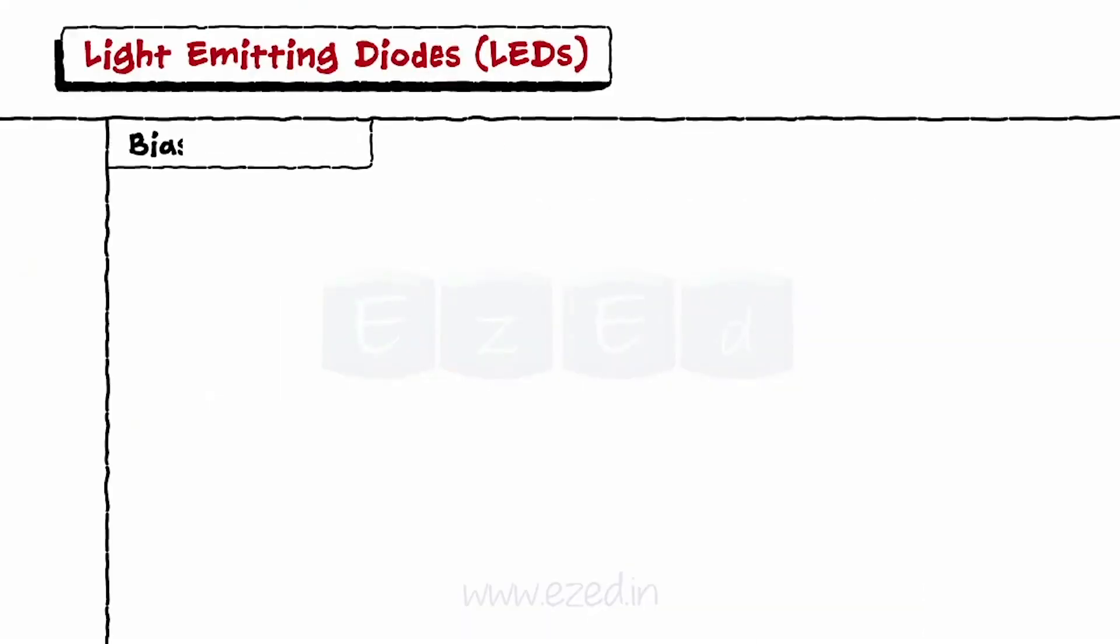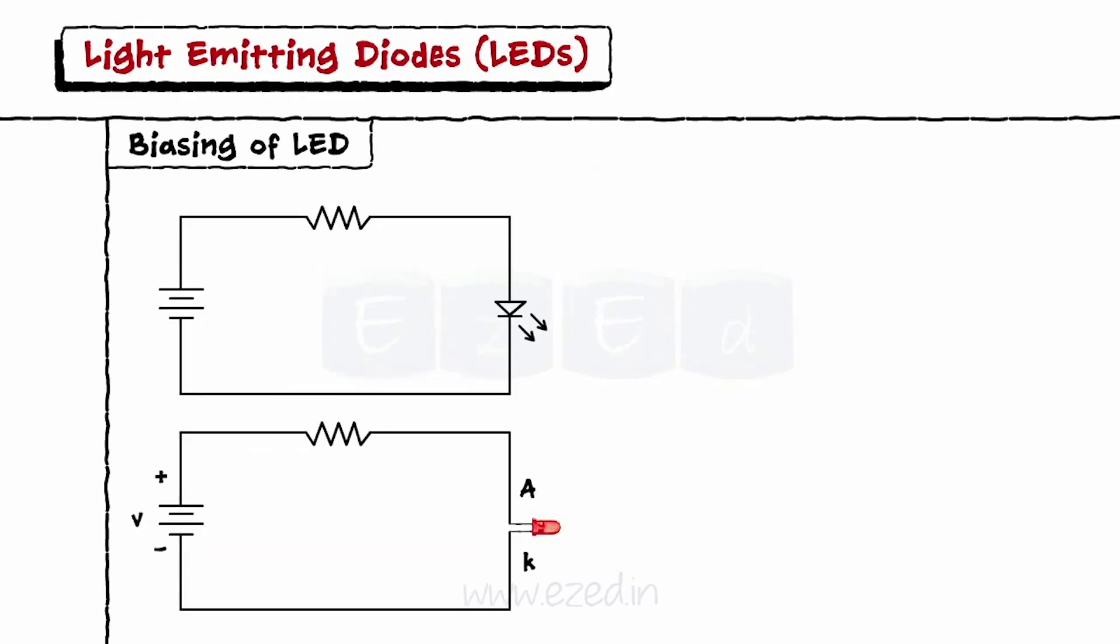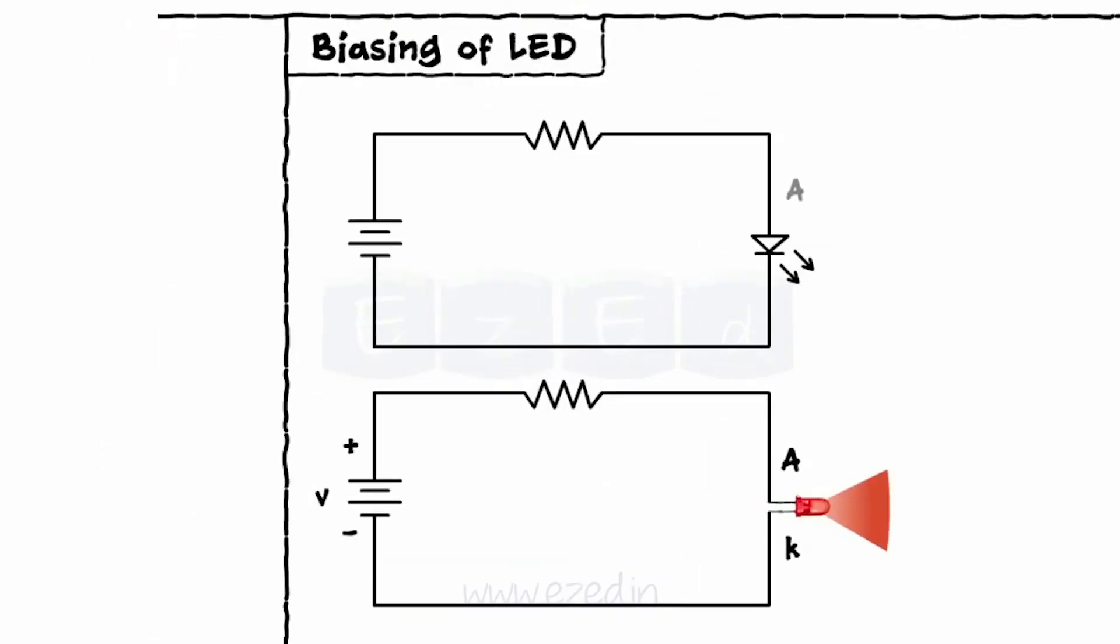Now let's learn the biasing of this LED. LED is biased in the same way PN junction diodes are biased. Anode is connected to positive of the supply and cathode is connected to negative of the supply.